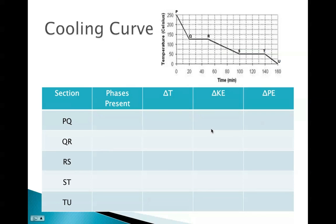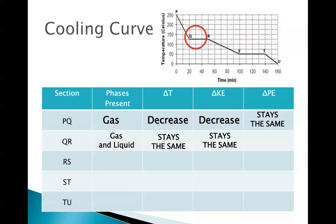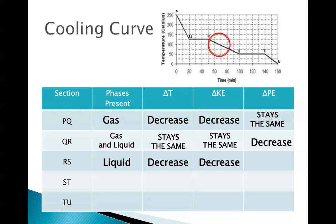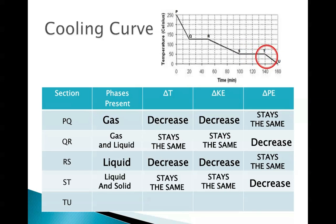A cooling curve is basically just the reverse of our heating curve. On slope PQ, we just have a gas — temperature and kinetic energy are going to decrease, and potential energy stays the same. QR is our first phase change, where a gas is condensing into a liquid — no temperature or kinetic energy change, and potential energy decreases. RS is where we have our liquid — temperature and kinetic energy decrease, and potential energy stays the same. ST is our second phase change, where freezing occurs from liquid to solid — temperature and kinetic energy stay the same, and potential energy decreases. Finally, for TU, we have a solid that decreases its temperature and kinetic energy, while potential energy stays the same.